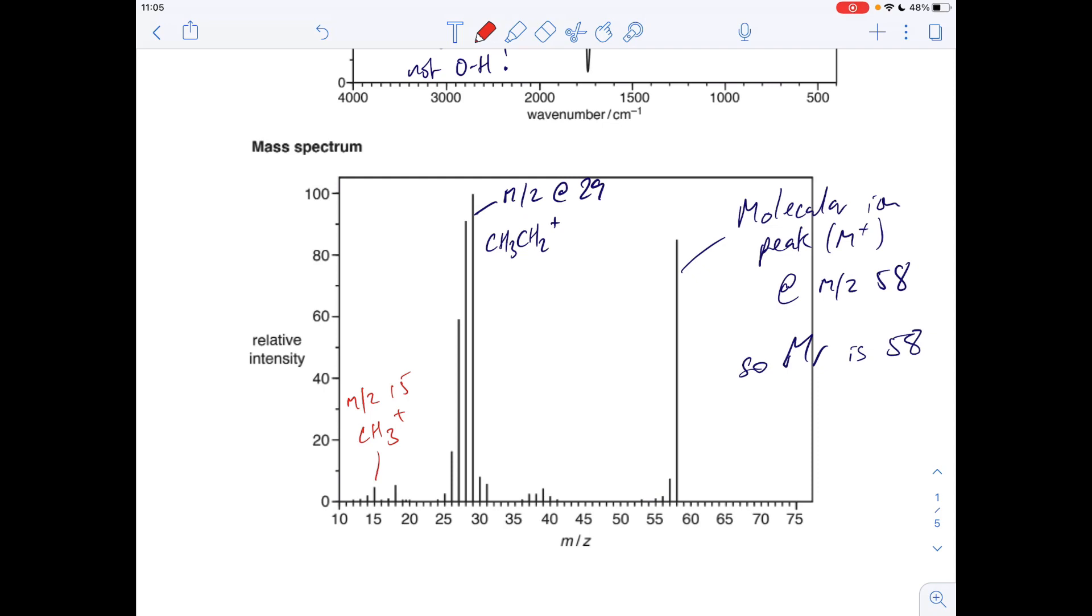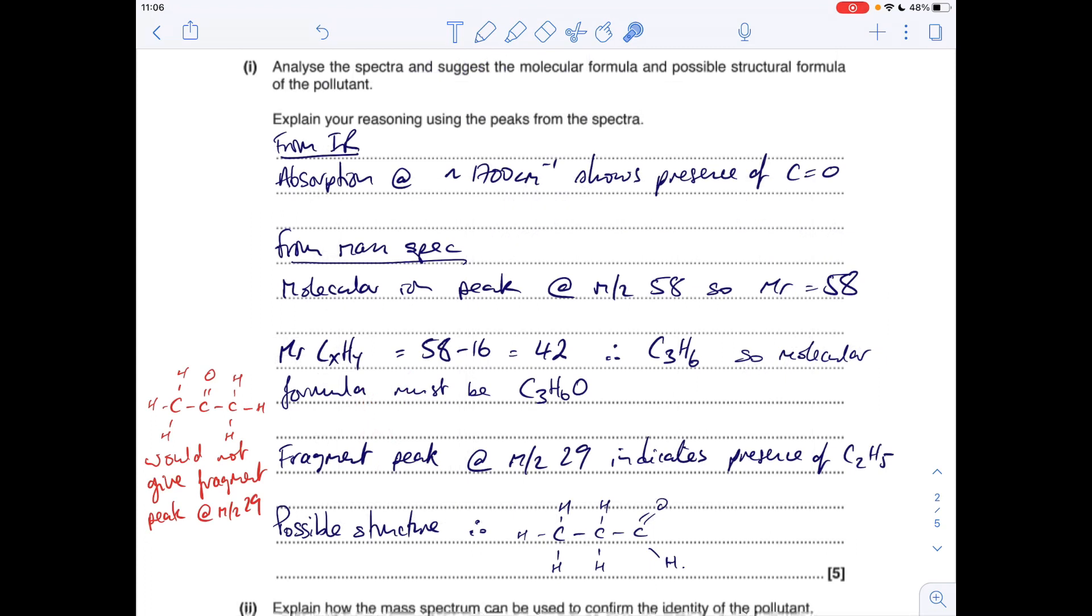Okay, so we're going to pull all that together now and come up with a structure. So I'm laying it out systematically, so it's making the examiner, you almost need to get the examiner on your side, so just lay it out nice and simply, nice and straightforward. So I'm saying from the infrared, the absorption at around about 1700 centimeters to minus one shows the presence of a C double bond O.